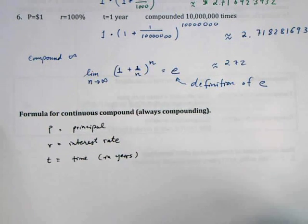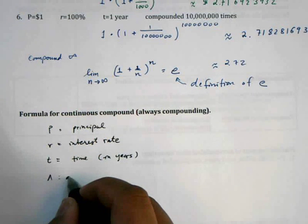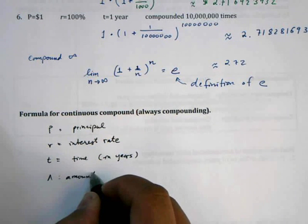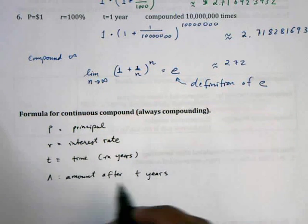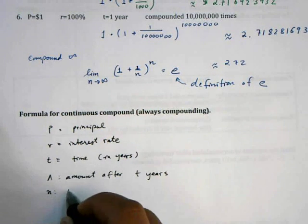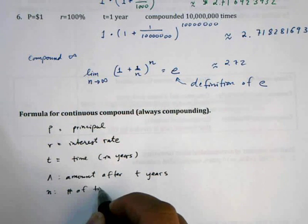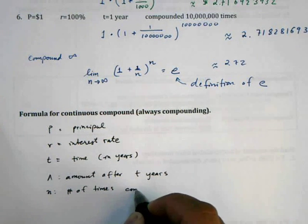And then we'll say that A is the amount after T years, and N is the number of times compounded.